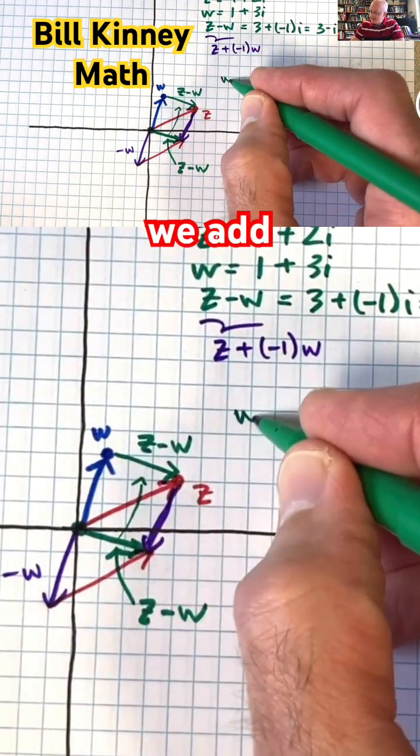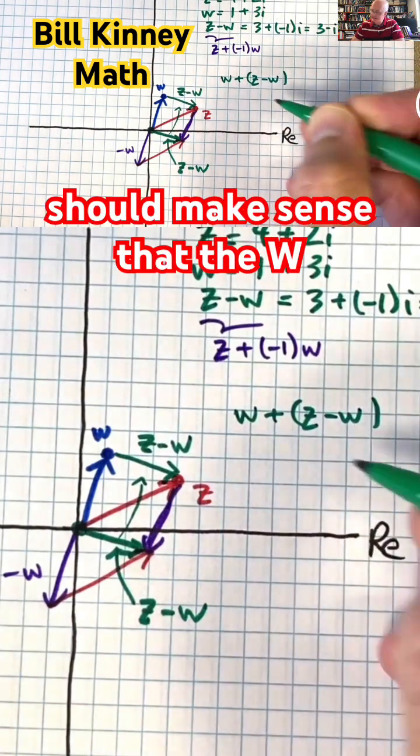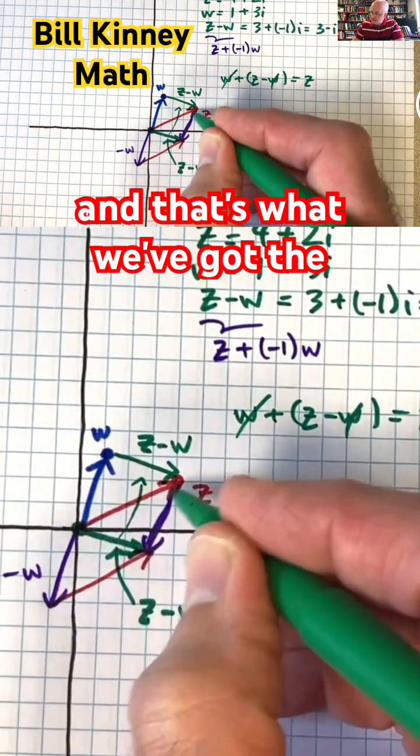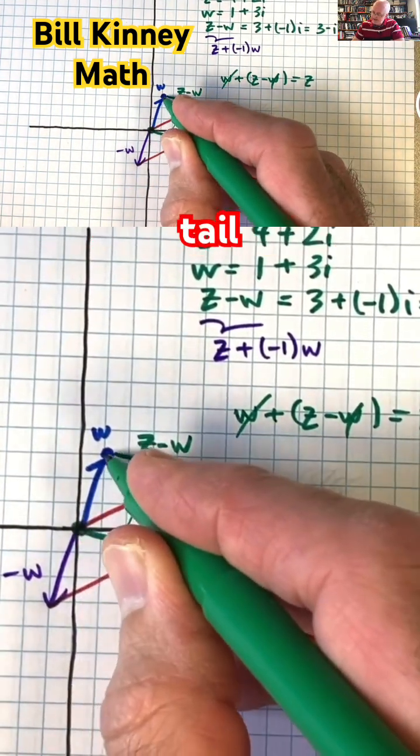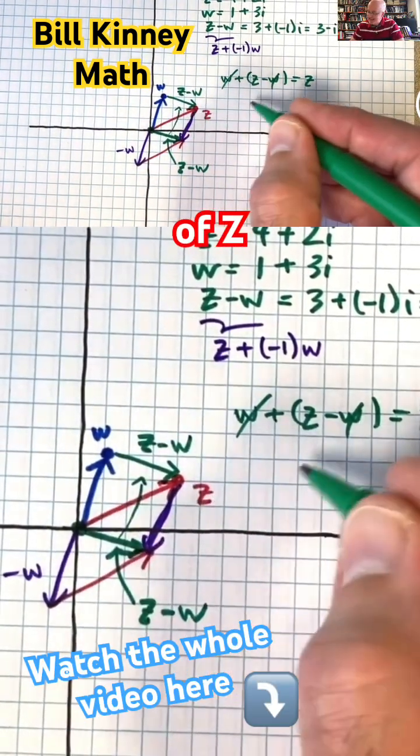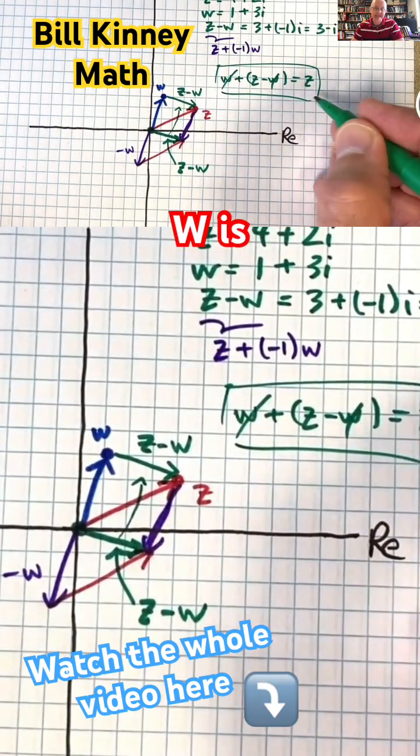Because when we add W and Z minus W, it should make sense that the W should cancel, leaving us with Z, and that's what we've got. The head of Z minus W, when you put its tail at the head of W, is pointing at the head of Z, illustrating this fact. W plus Z minus W is Z.